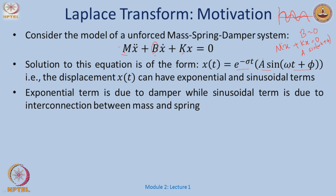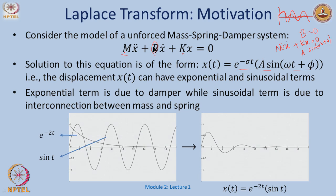Once we have b, we get an exponentially decaying term, and the response will eventually go to 0. The exponential term is due to the damper, while the sinusoidal term is due to the interconnection between the mass and spring. For example, e^(−2t)·sin(t) looks like damped oscillations.